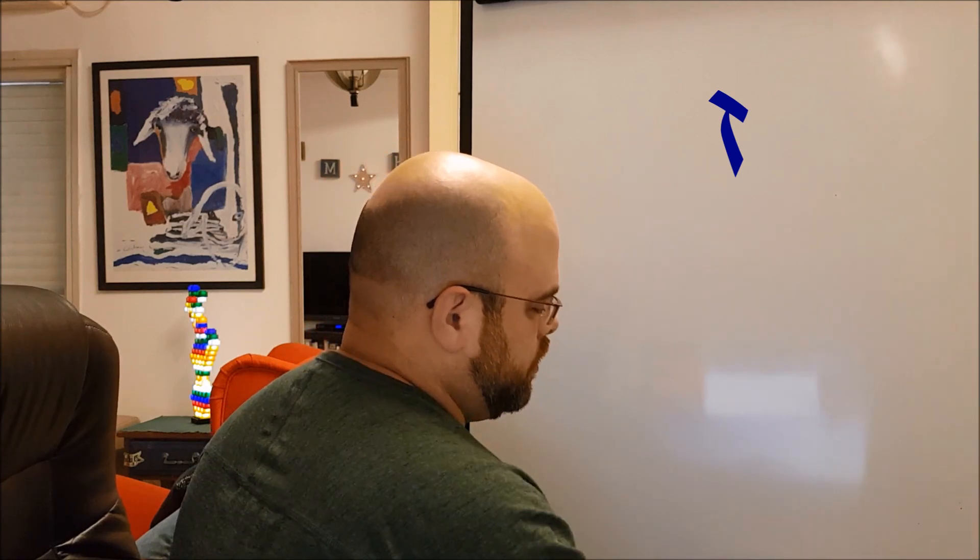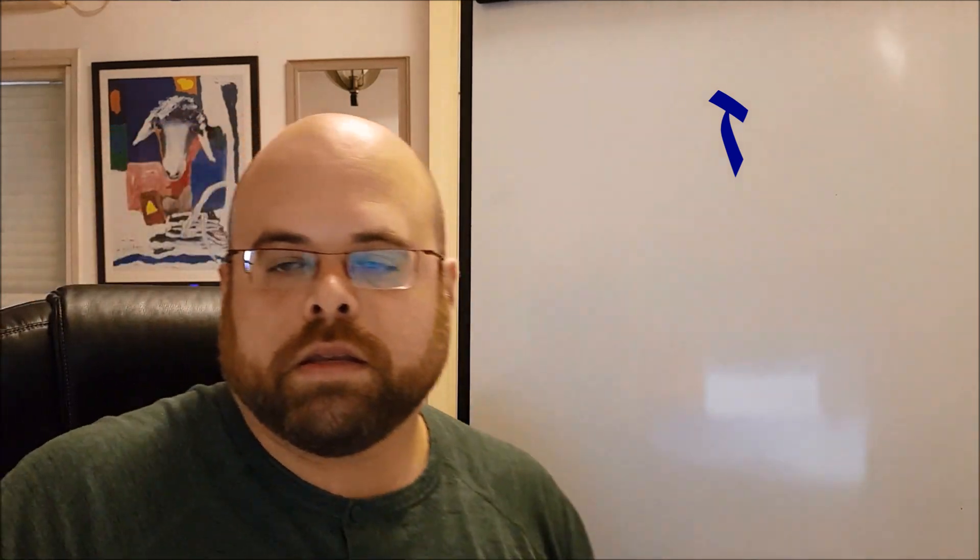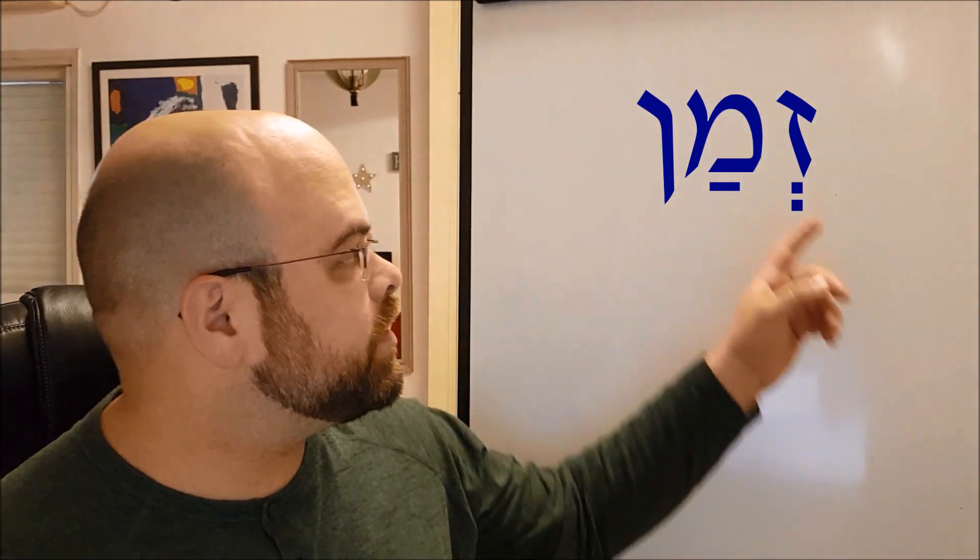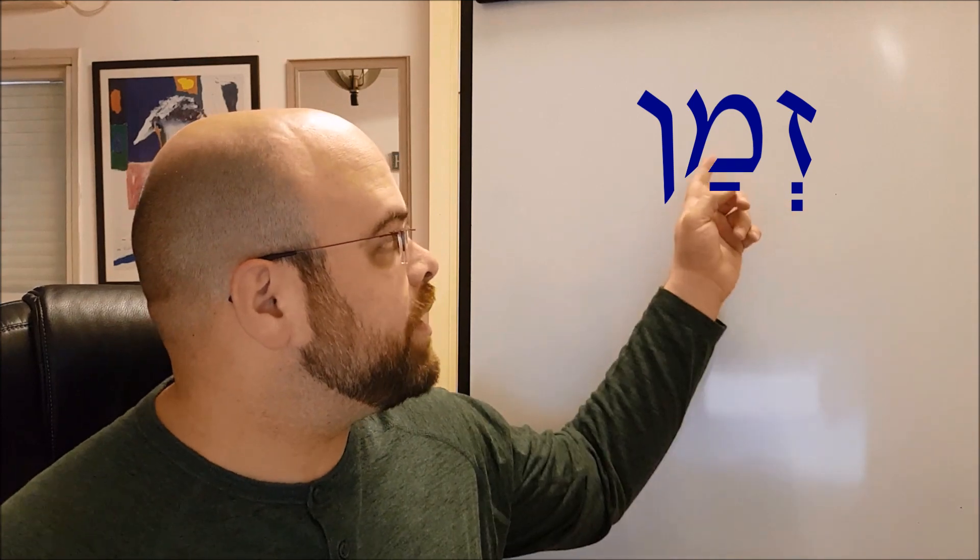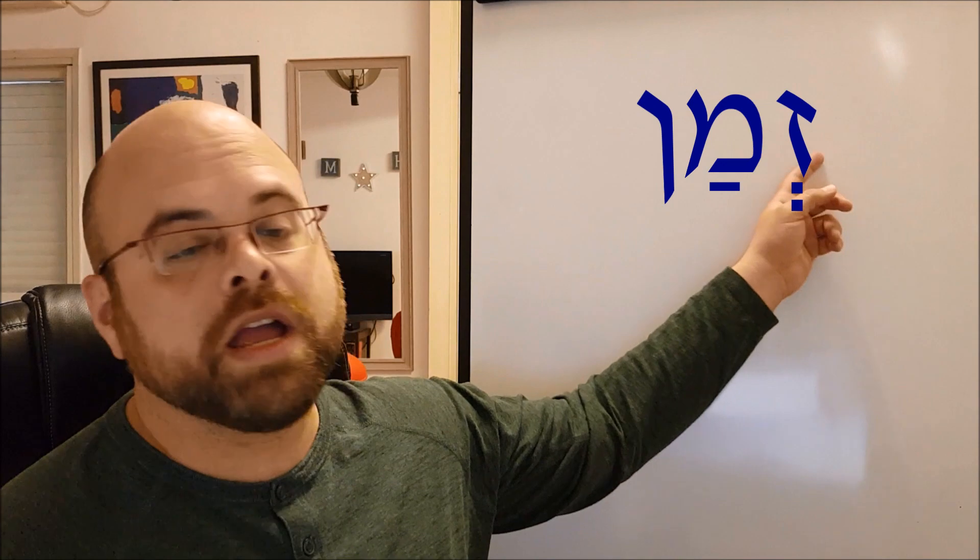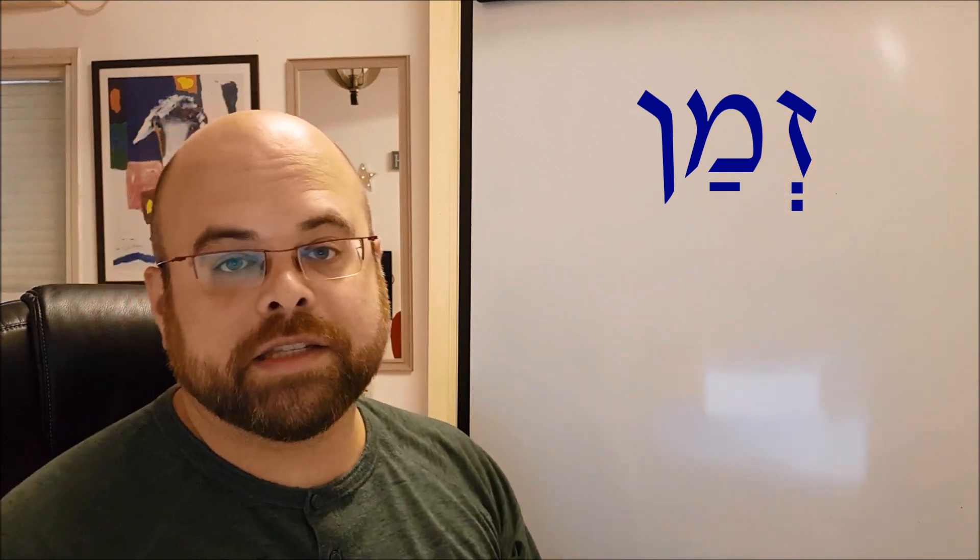Now let's see a word with the letter ZEIN. This word is ZMAN. So we have the letter ZEIN, and then the letter MEM which is the sound M with the PATACH, so it's MA, and then the last letter is the NUN SOFIT, the final NUN, so it's the sound N. So together ZMAN.